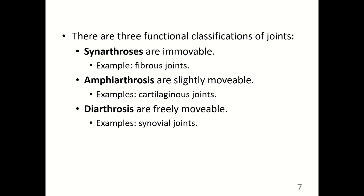There are three functional classifications of joints: synarthrosis, amphiarthrosis, and diarthrosis. Synarthroses are immovable joints; amphiarthroses are slightly movable; and diarthroses are freely movable. 'Syn' means fused together, so synarthroses are generally fused. 'Amphi' means between, so amphiarthroses are between immovable and freely movable. 'Dia' means thorough or complete, so a diarthrosis has thorough or complete movement.